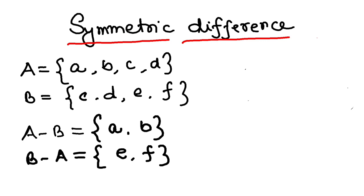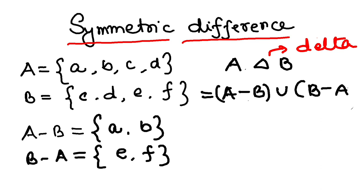So symmetric difference is written as A delta B. You have to read this as delta. A delta B is very simple: A minus B union B minus A.